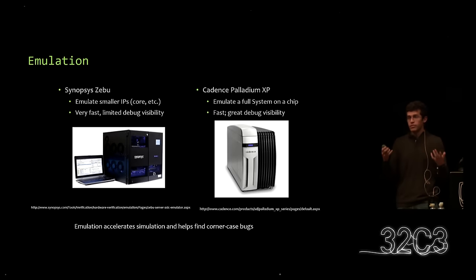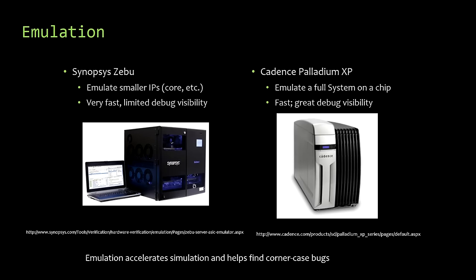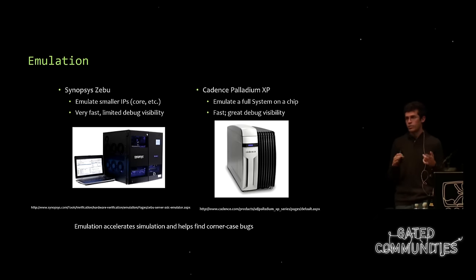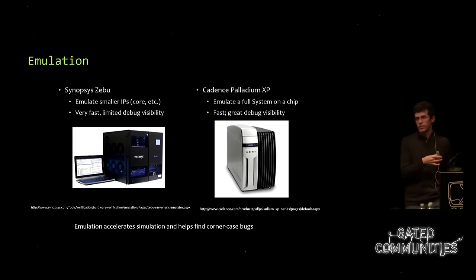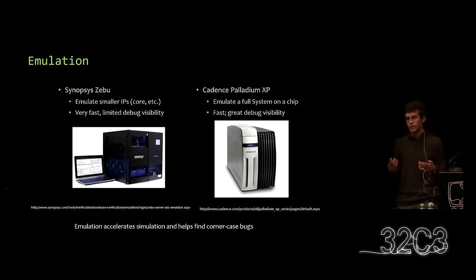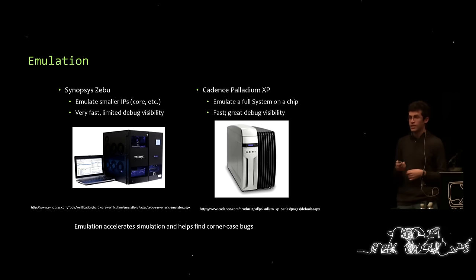There is a way to throw more hardware and money at this problem — something called emulation. Two major design tool companies, Cadence and Synopsys, make emulation machines. These are special FPGA-based hardware that allow you to load a design and run testing at a faster rate. One of these boxes is going to set you back close to a million dollars, but they can run at around 1 to 1.5 megahertz — still 2,000 to 3,000 times slower than real silicon, but a million times faster than simulation. So they're very useful, but also costly.